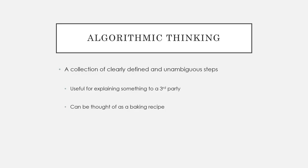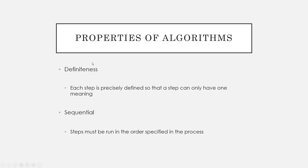An algorithm is just a collection of clearly defined and unambiguous steps — basically a set of instructions. Algorithms are useful for explaining something to a third party, and we can think about it as simply as a baking recipe: clearly defined and unambiguous steps. Some properties of an algorithm include definiteness — each step is precisely defined so it can only have one meaning — and algorithms must also be sequential, meaning the steps must run in the order specified. You can't take a baking recipe and do the last step first.